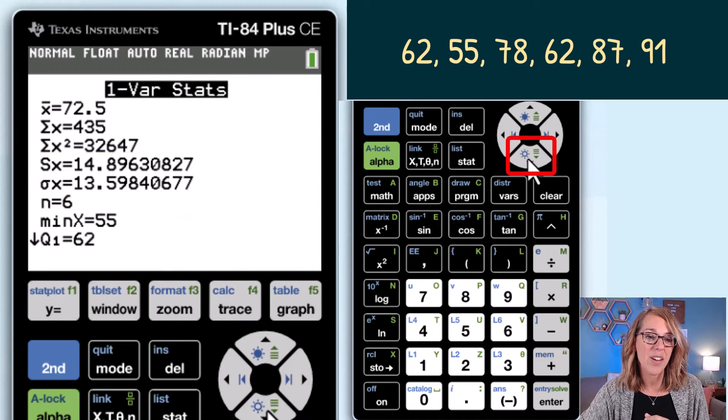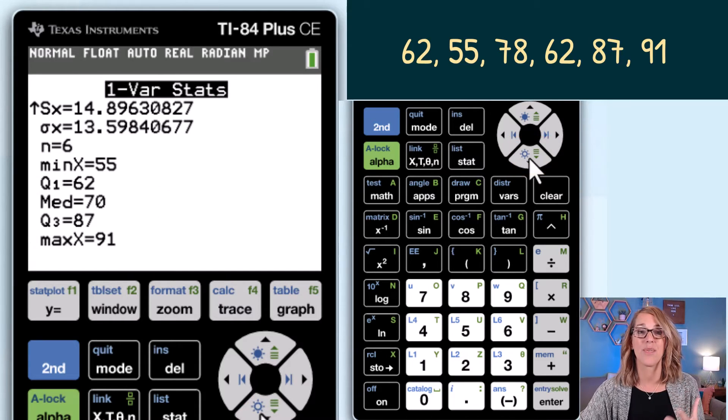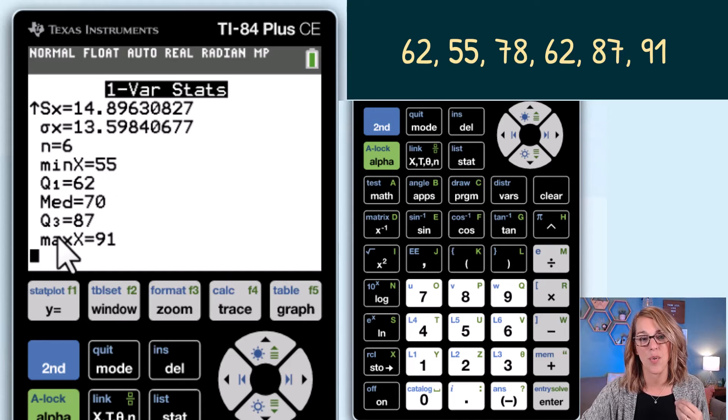If I arrow down by clicking the down arrow I can see the rest of my measures. n is the number of values in my data set. There are six and now I've got my five number summary. Minimum, first quartile, median, third quartile, and my maximum.